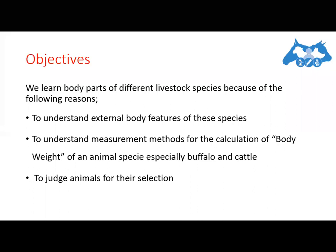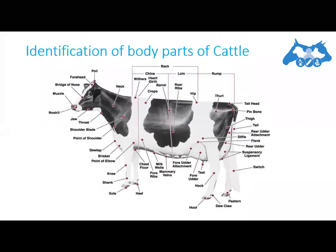Moving to the first slide of cattle: the different parts of cattle — starting from the head up to the neck — we can observe the poll area, the forehead, the bridge of the nose, muscles, nostrils, and the upper and lower jaws. Then comes the throat and the neck.